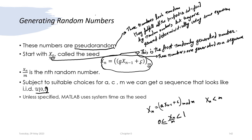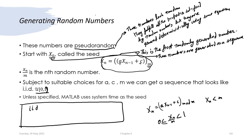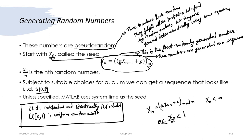Suitable choices of a, c, and m can be looked up on the internet, because every piece of software that generates random numbers has its own choices. We will not specify those choices here. Now, since this is the first time we are using these terms: iid means independent and identically distributed, and U(0,1) is a uniform random variable between 0 and 1.